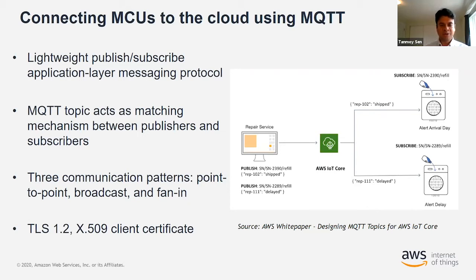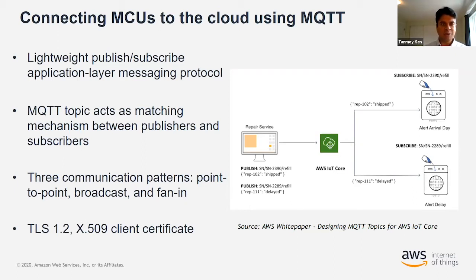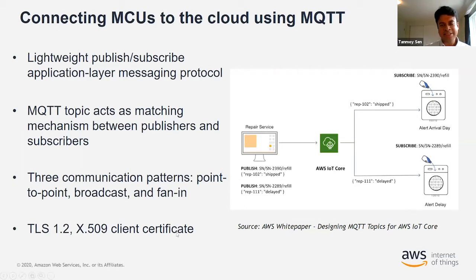The second is a broadcast pattern, where a single publisher sends the same message to all subscribers. For example, a weather station transmitting a broadcast message to all buses in the nearby area — all buses listen to the message and take actions based on it. The third is the fan-in pattern, the exact reverse of broadcast, where several publishers send data to a single topic and one subscriber is listening. This is useful for robotic arms sending health status regularly to the same topic; the IoT application aggregates the data, making the application more reliable.